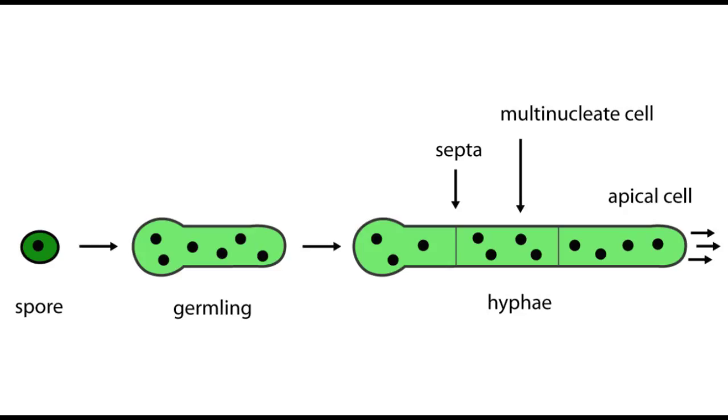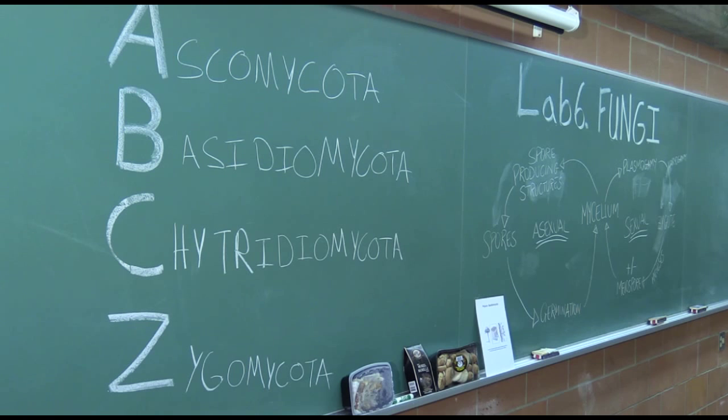Mycelium are made up of filaments. And filaments are made up of hyphae. These hyphae are separated by septa. In lab six, there will be four phyla they'll be looking at in the kingdom of fungi.